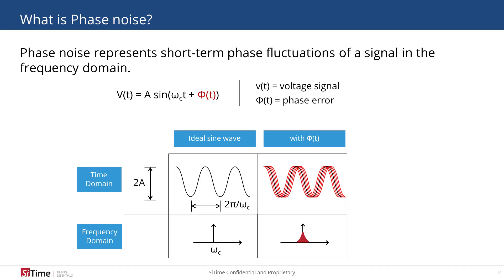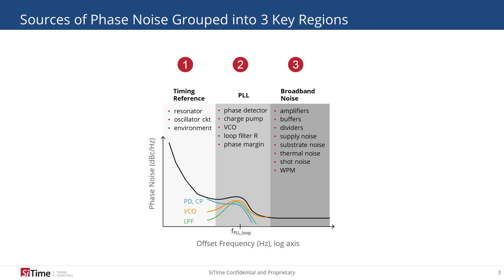An ideal sine wave doesn't have any noise on it and appears in the frequency spectrum as an impulse function. When we add a phase error term phi(t), we get phase modulation, and in the frequency spectrum this adds aprons around the impulse function. If we zoom in on a single sideband of that apron and normalize the y-axis to units of dBc per Hz, then we have a phase noise plot as shown here.